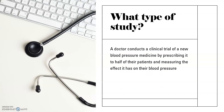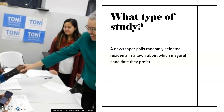A doctor conducts a clinical trial of new blood pressure medicine by prescribing it to half of their patients and measuring the effect it has on their blood pressure. There is a sample group that's receiving treatment and another group that is not. So this is an experimental study because there is a treatment involved — there is a change being prescribed to half of the group.